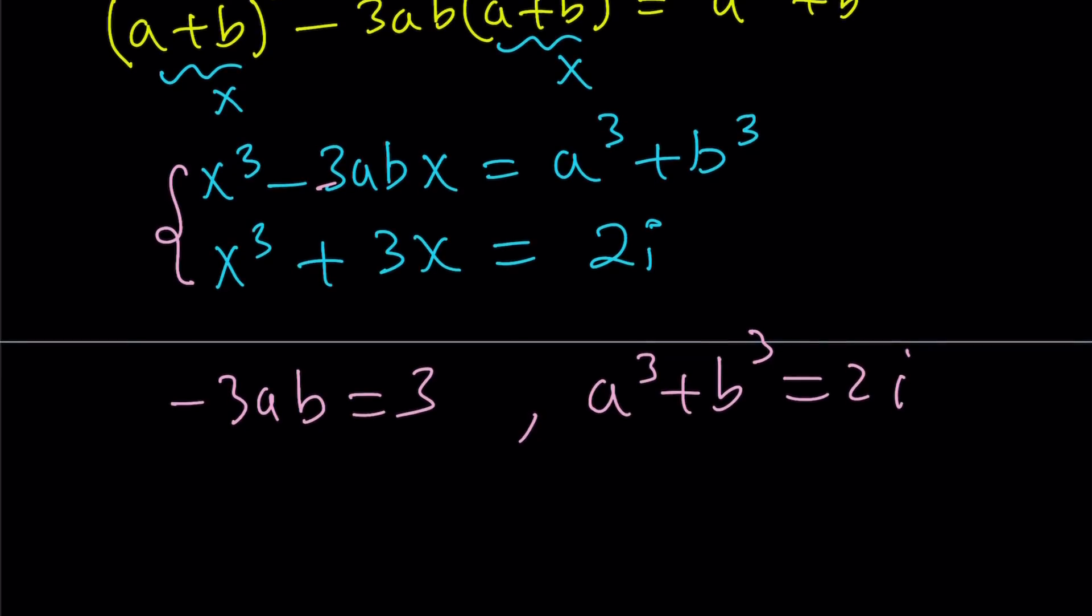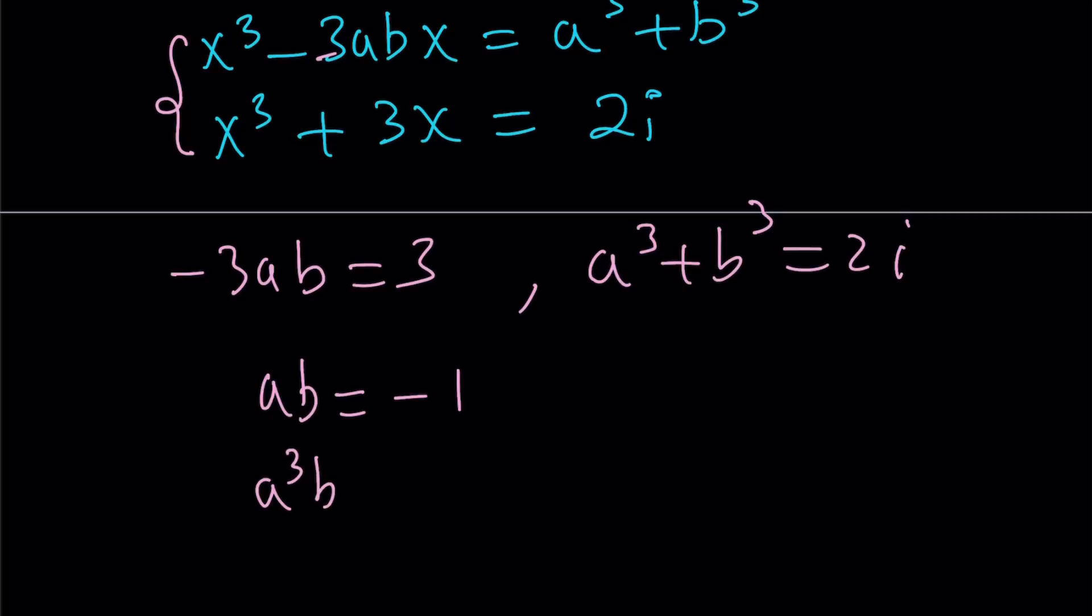And this gives us the following: ab equals negative 1. Let's go ahead and cube both sides here, a cubed b cubed equals negative 1, a cubed plus b cubed is equal to 2i. Let's solve this as a system. Remember, this is a quadratic in a cubed, so we can isolate b cubed from here, 2i minus a cubed, and then substitute in the other equation right here.